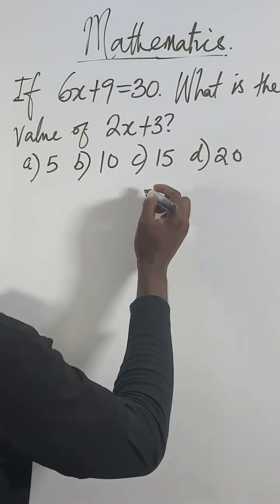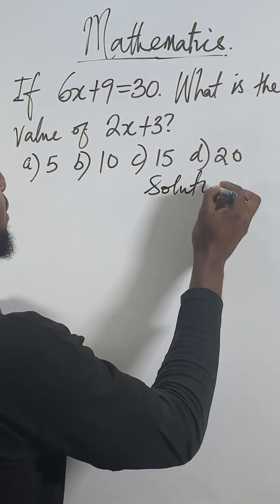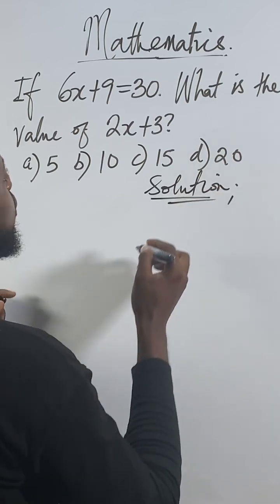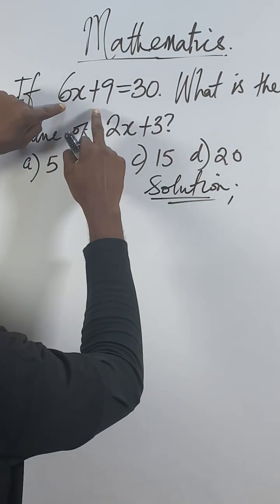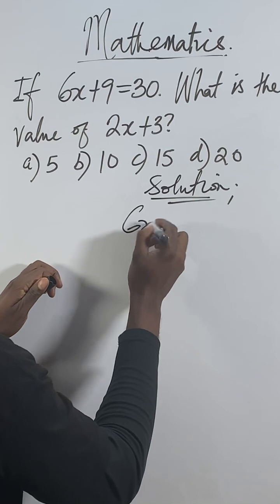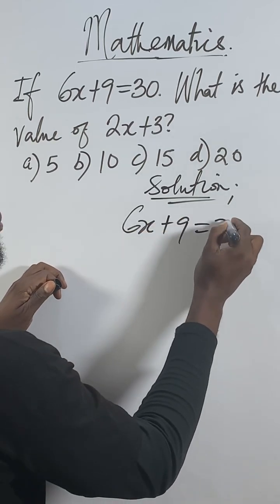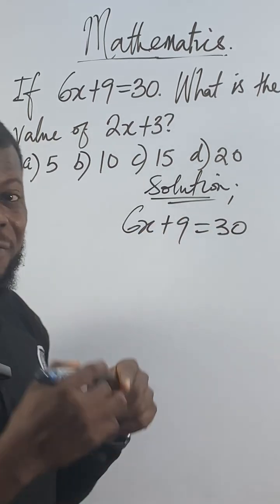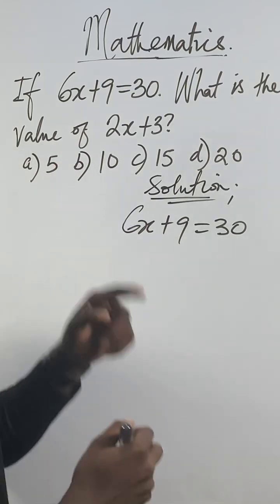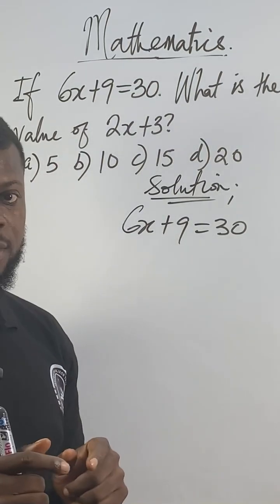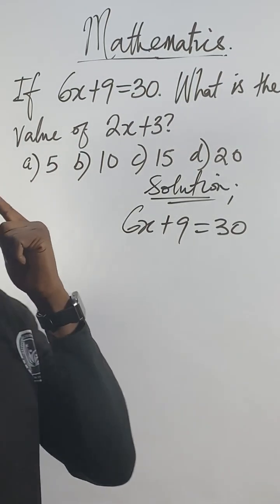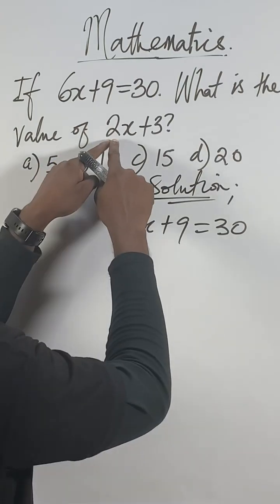I'll show you now. The first thing we will do for this kind of question, if you see it on SAT exams or GCSE or JAMB anywhere. They say if 6x plus 9 equals 30, find the value of 2x plus 3. So now you will first reason quickly how to get the value of 2x plus 3.